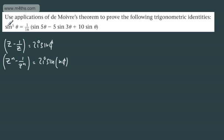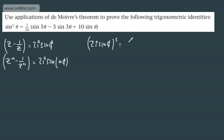What we're looking for now is sine to the fifth theta. So if I think about raising all of this to the fifth power, I'm going to have 2i sine theta to the fifth power, all of that to the fifth power. And then I can set that equal to z minus 1 over z to the power of 5.